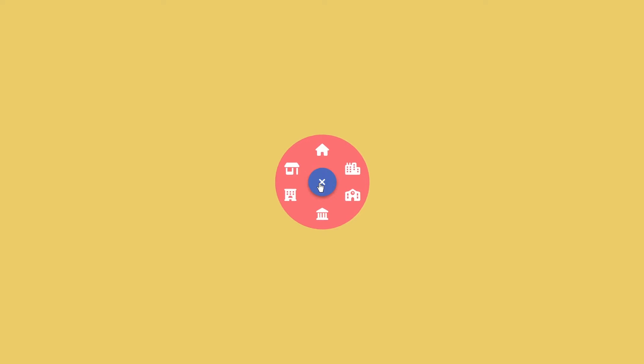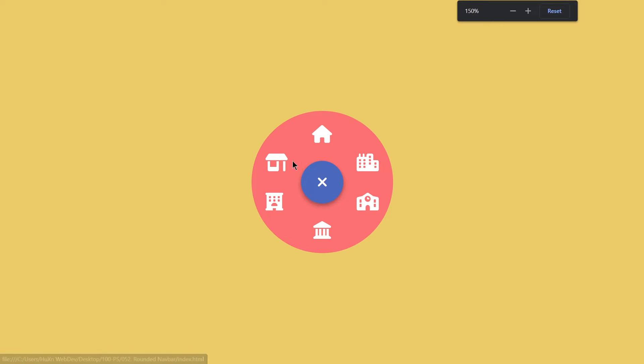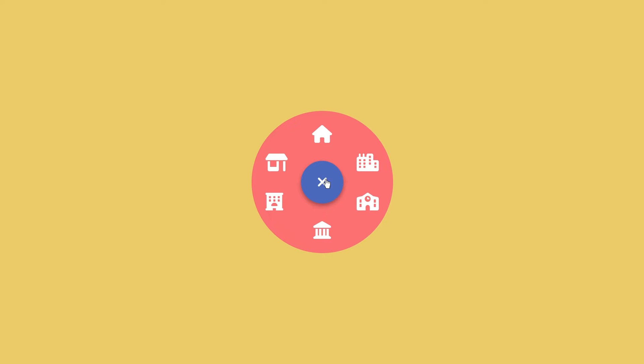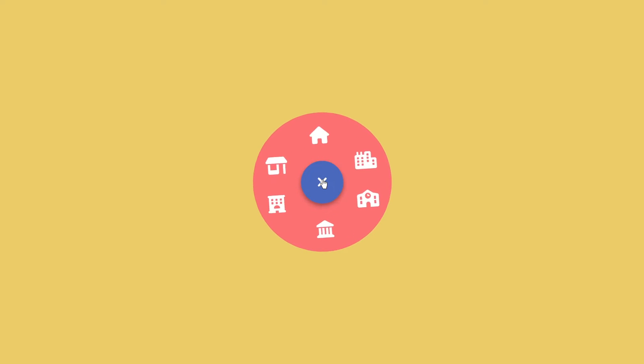In this video, we are going to be creating this rounded navbar by just using HTML, CSS, and JavaScript. Here you can see we have this plus icon, and if I click on that, it will open this rounded navigation right here. We have this home and all of these sections. If I click on it again, it will disappear. This is what we are going to be building.